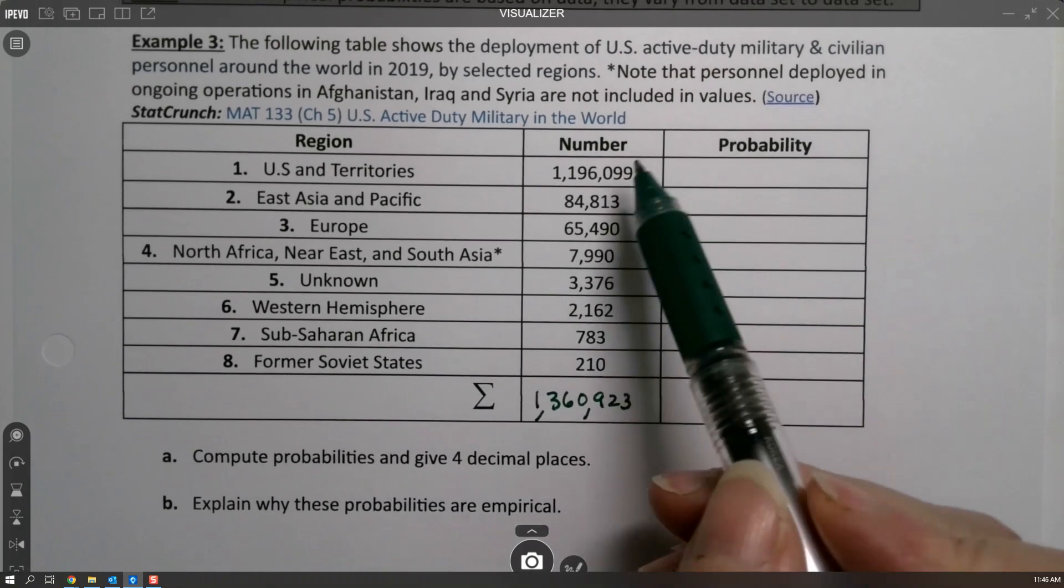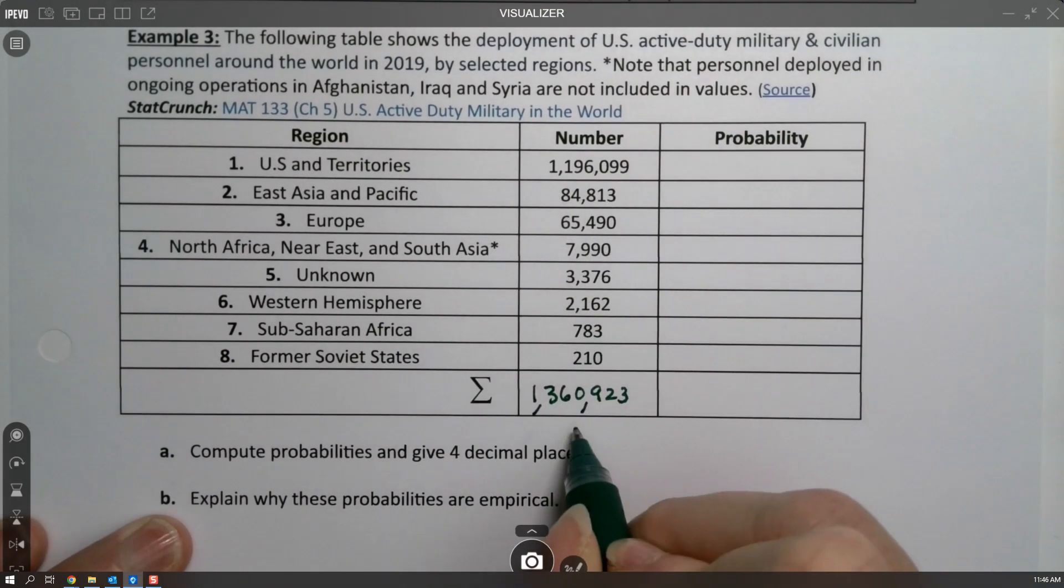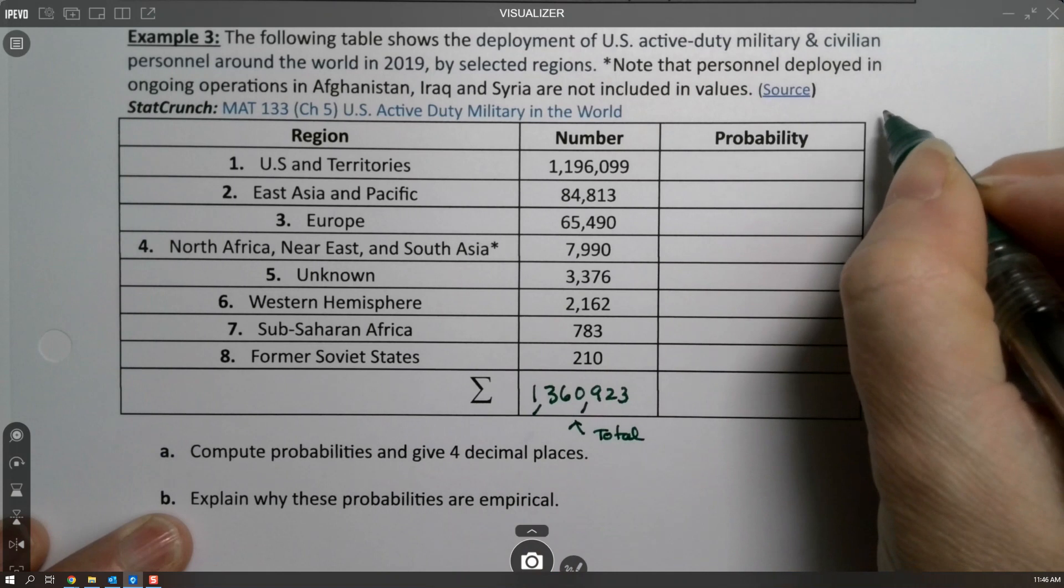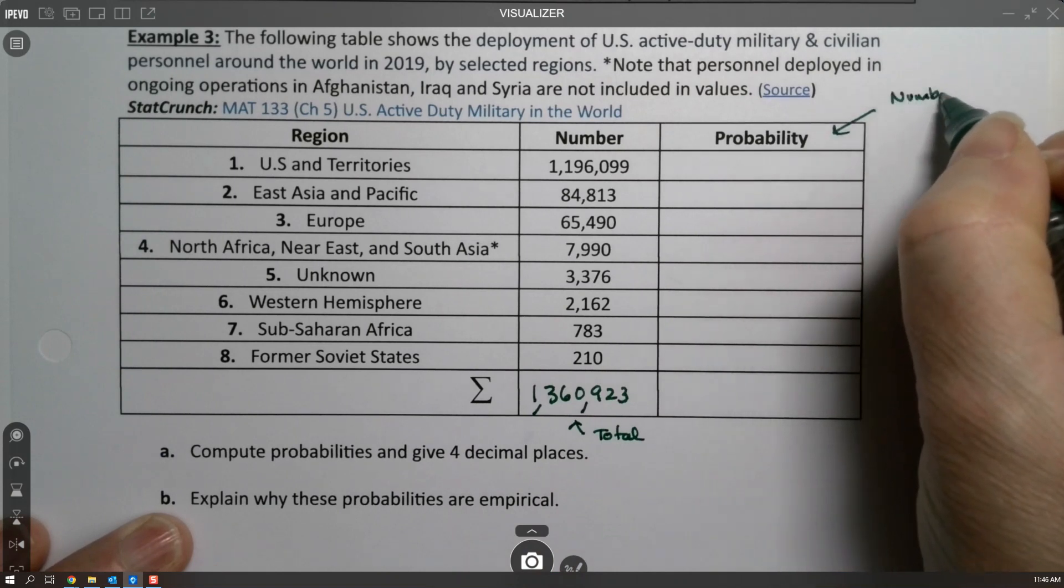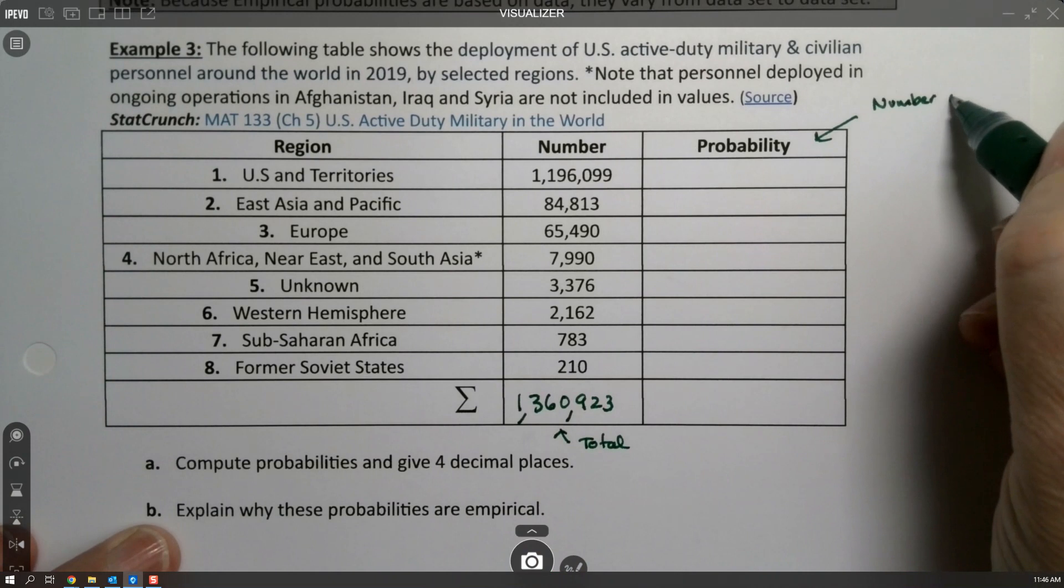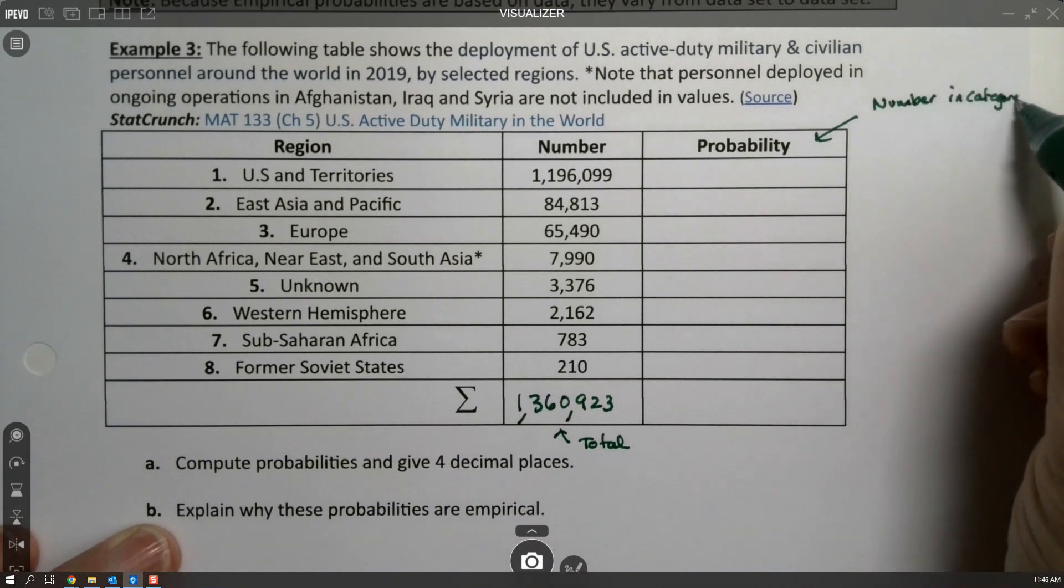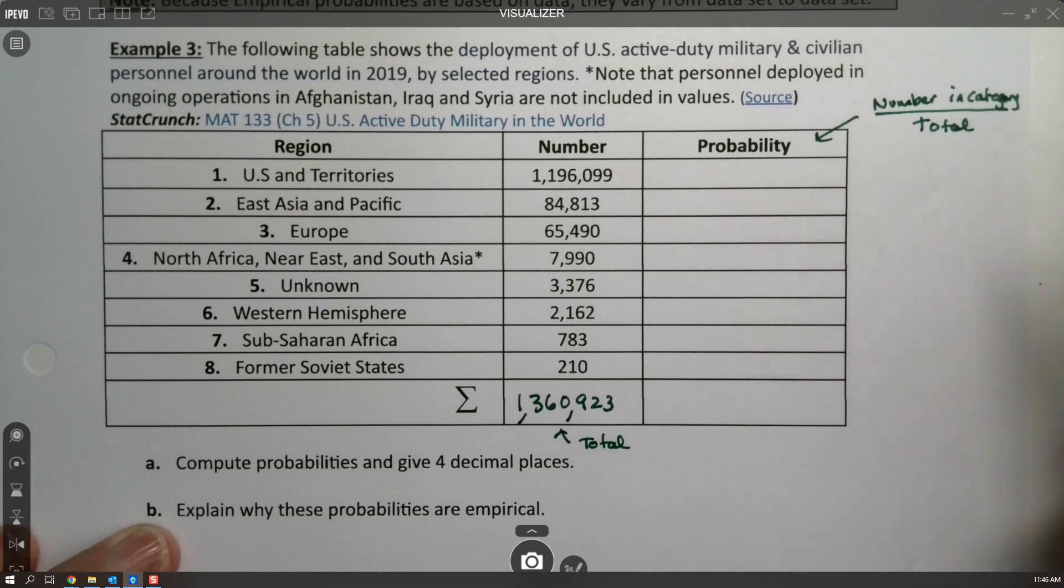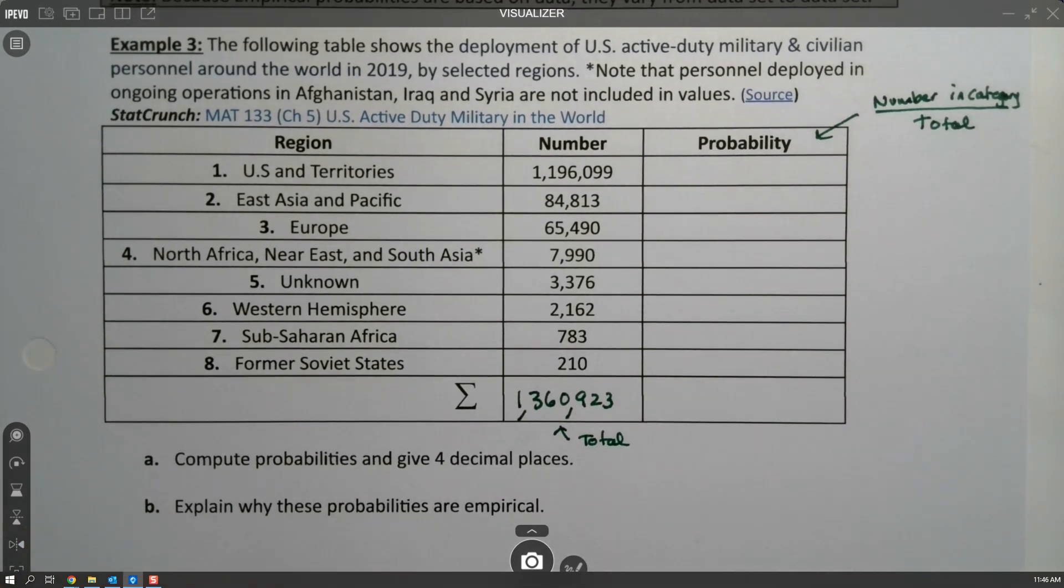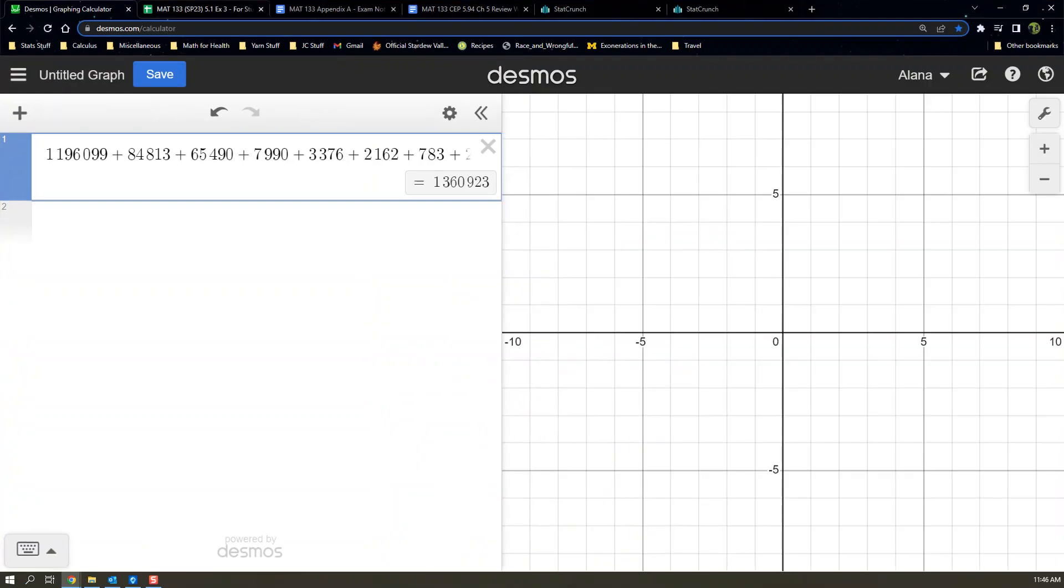Now we need to find the probabilities. The probabilities are the number divided by the total. So the probabilities will be the number in the category divided by the total. You can grab Desmos and copy and paste the number, divide it by that total, and we have it - so 0.8789. You can continue in this manner, so the next one would be 0.0623 and so on.